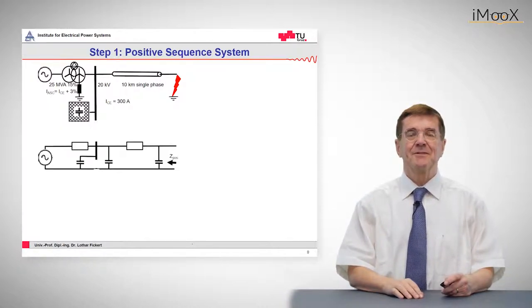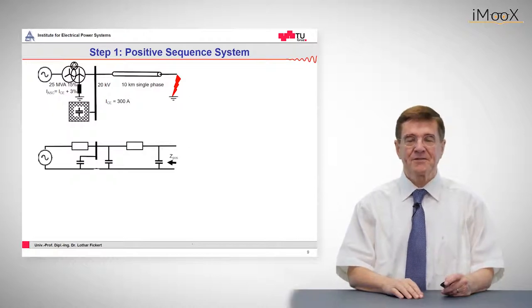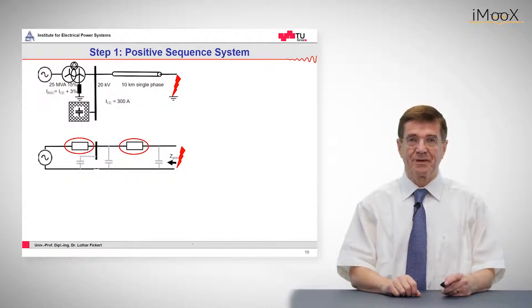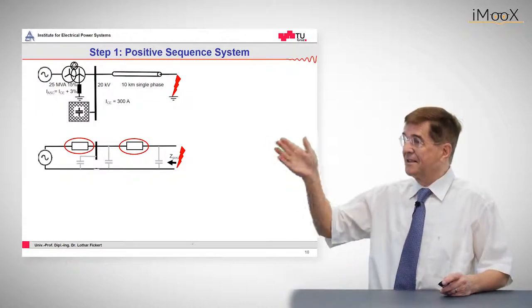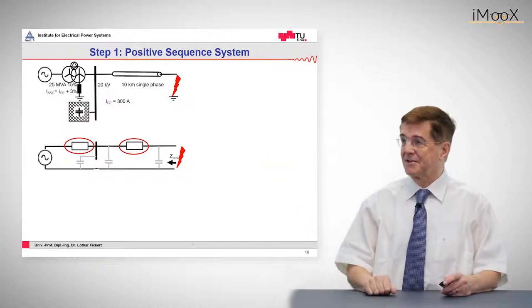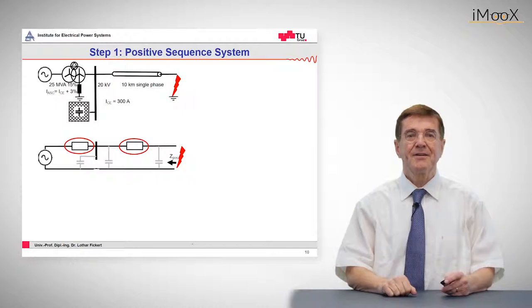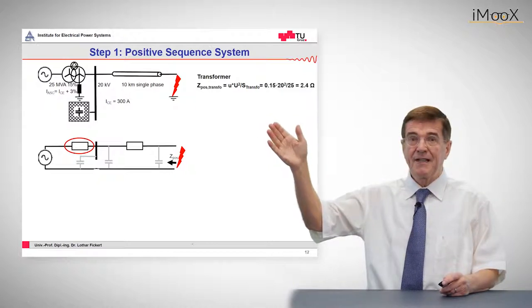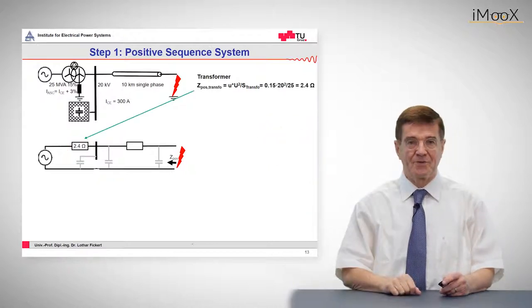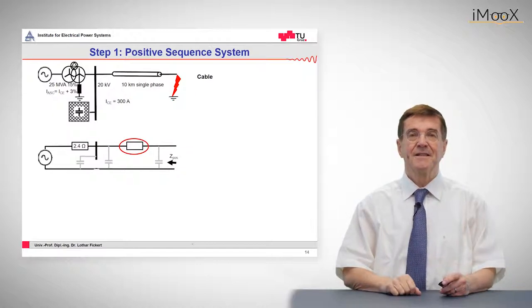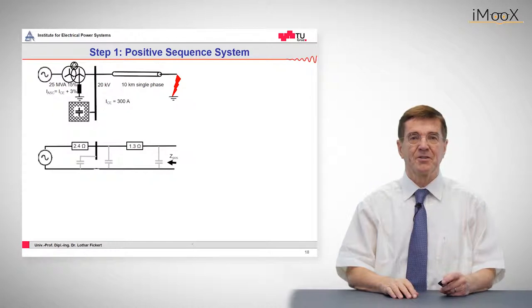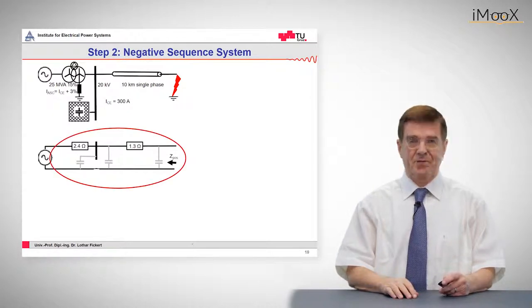Now let's start with the positive sequence system. The positive sequence system is known to everybody because a three phase short circuit is controlled by the vital elements of this three phase system, which is the transformer impedance and the line impedance. The transformer impedance can be calculated as shown above and the value is 2.4 ohms. The same applies to the line impedance. The line impedance is the specific impedance of the line multiplied with the length of the line, and that comes out as 1.3 ohms.